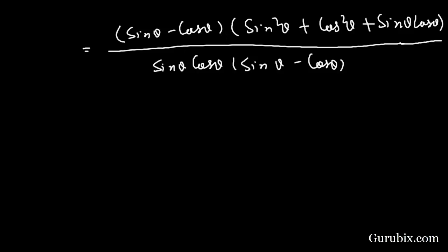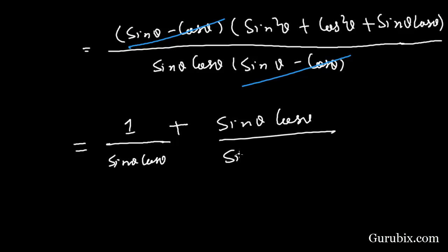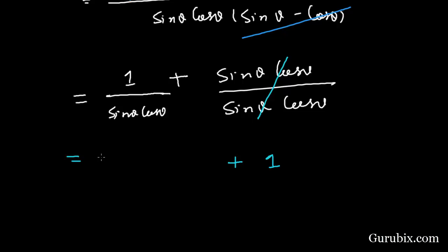We can now cancel out (sin θ minus cos θ) from the numerator and denominator. We are left with sin squared θ plus sin θ·cos θ plus cos squared θ, and since sin squared θ plus cos squared θ equals 1, this simplifies to 1 plus sin θ·cos θ in the numerator over sin θ·cos θ in the denominator, giving 1 plus sec θ·cosec θ. Hence the identity is proved.